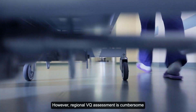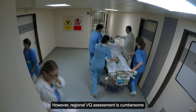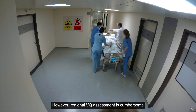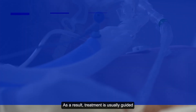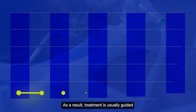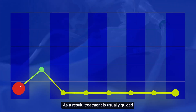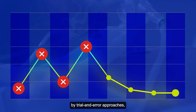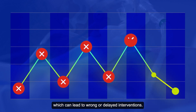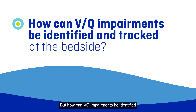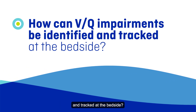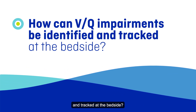However, regional VQ assessment is cumbersome and not available at the bedside. As a result, treatment is usually guided by trial-and-error approaches, which can lead to wrong or delayed interventions. But how can VQ impairments be identified and tracked at the bedside?